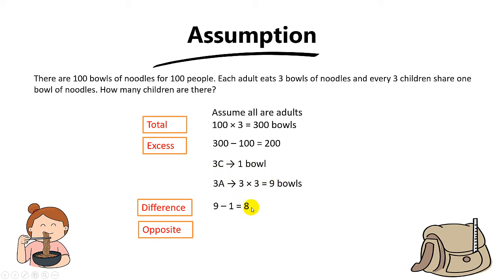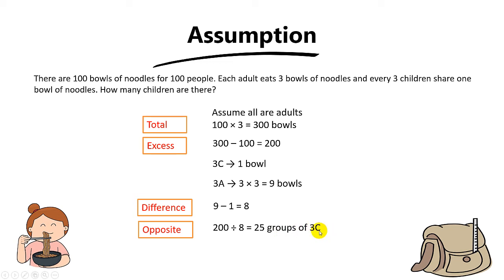The difference within one group is nine minus one, which equals eight. The opposite step gives us 200 divided by 8, which equals 25. But be careful — this 25 is not the number of children. It is the number of groups of children, and every group consists of three children.